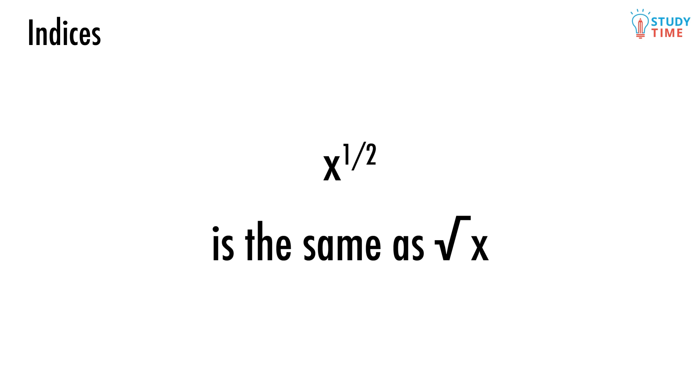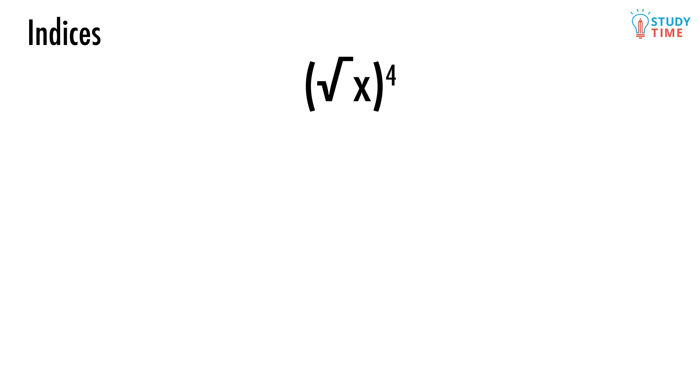We can combine all of our insane index skills into questions that ask us to simplify or evaluate a strange looking expression, like this one. Let's start by changing the square root into a fractional index. Now that we've done that, we can just use those index laws we showed you a couple of minutes ago to multiply the indices together.